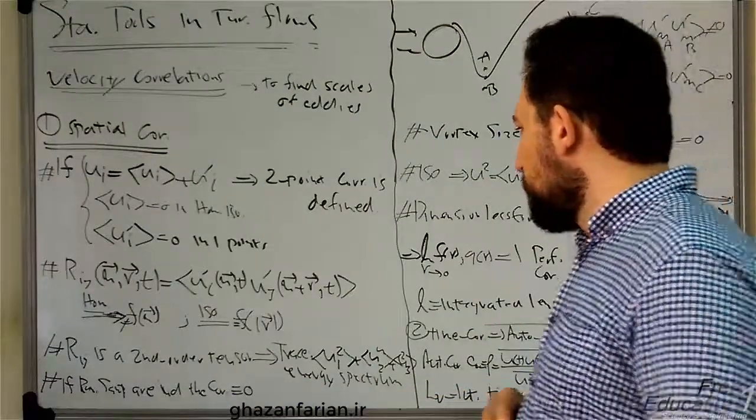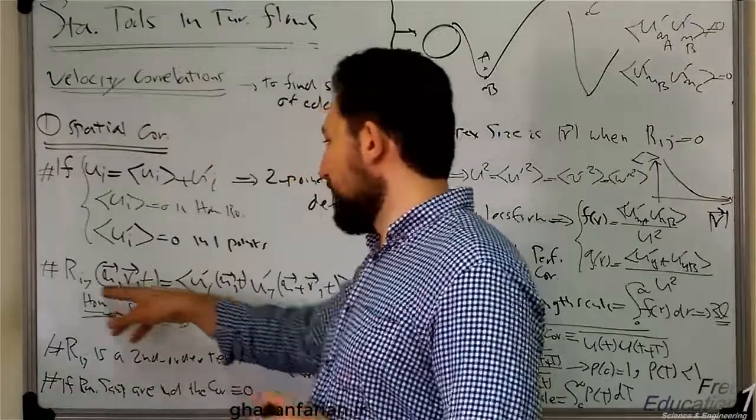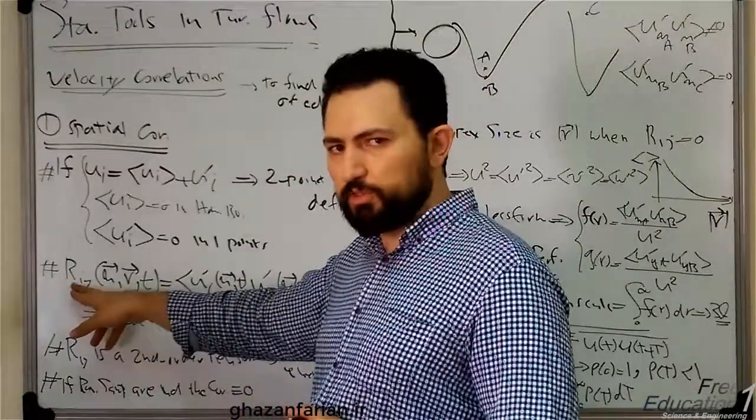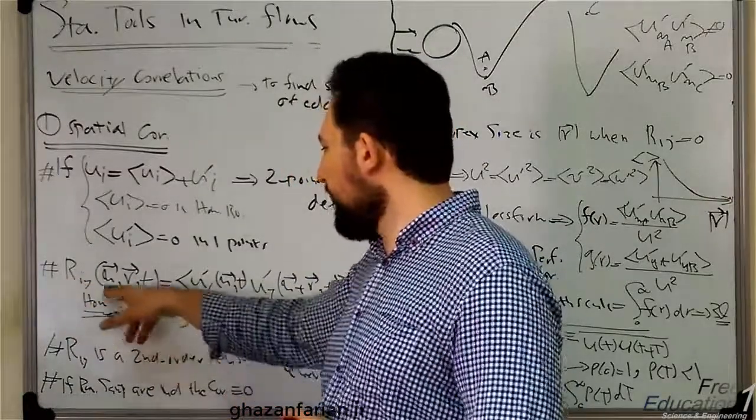For homogeneous flows, this relation or this tensor, second-order tensor, is not a function of x. So you can omit x from this relation in homogeneous flows.